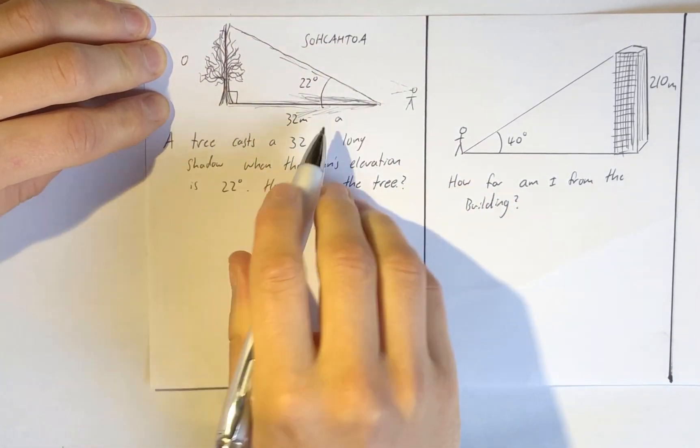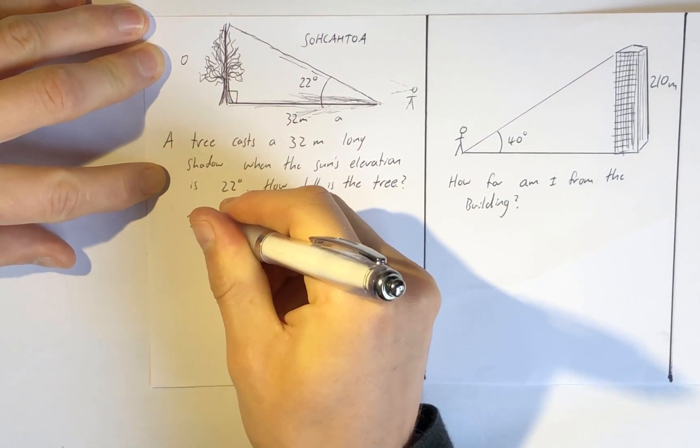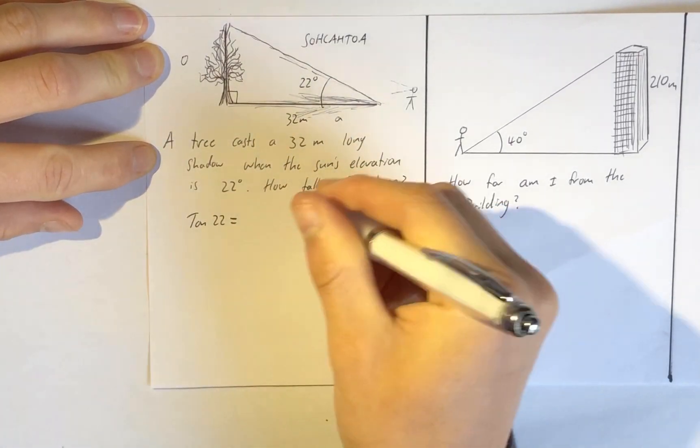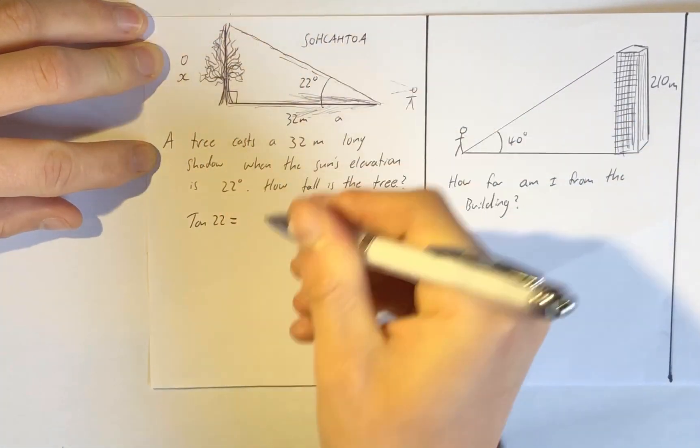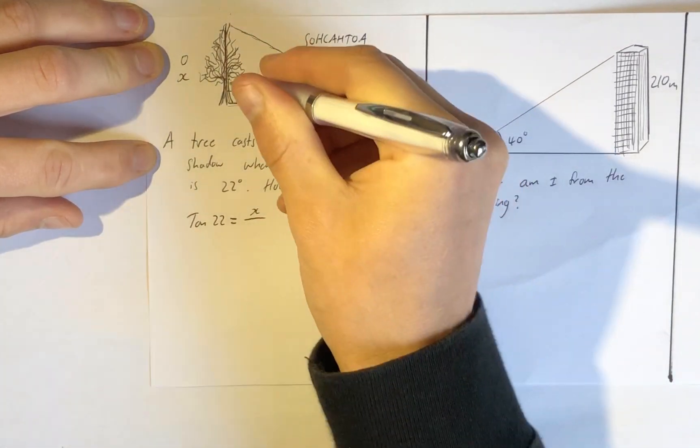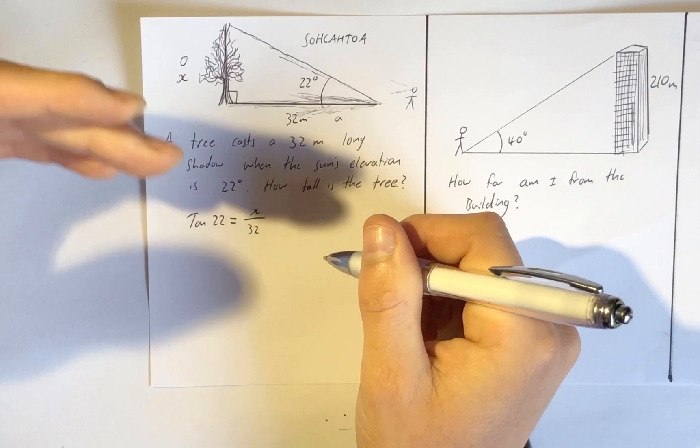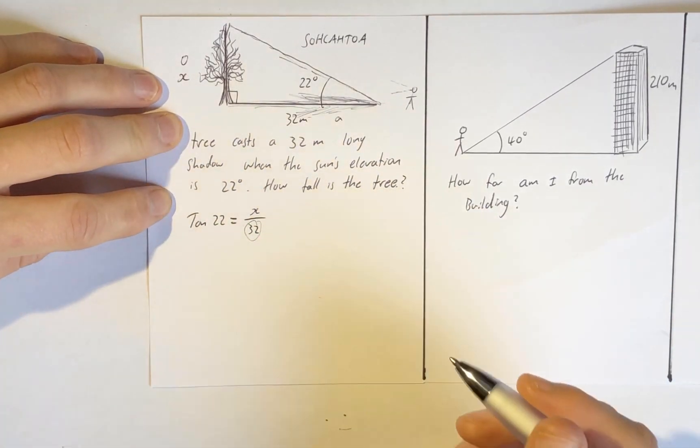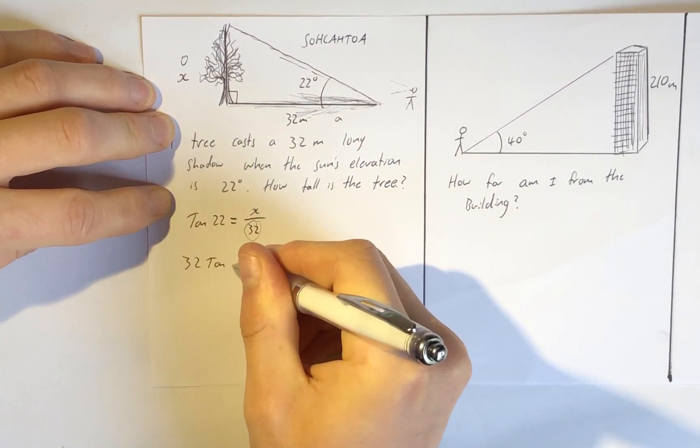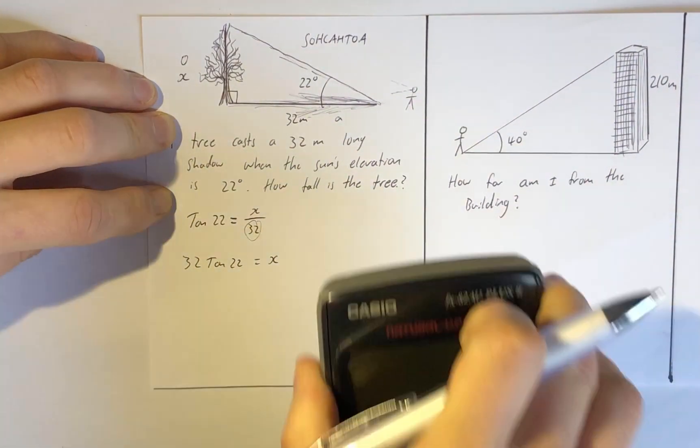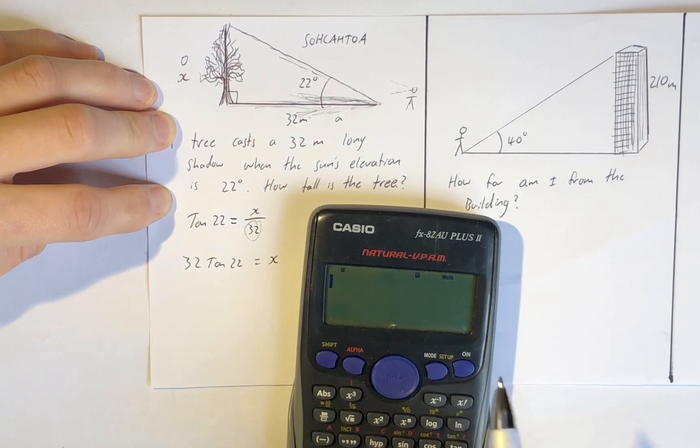That means that tan of 22 degrees is equal to this unknown side x over this known side 32. So what we can do is multiply both sides by 32, so 32 tan of 22 degrees equals x.